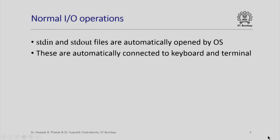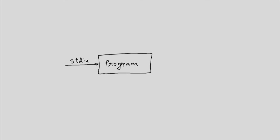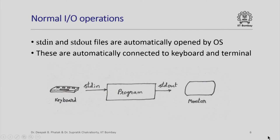Let us look at this action of the operating system diagrammatically. When we execute our program, the operating system connects the file stdin to our program and similarly connects stdout to our program. What the operating system does by default is that it connects stdin to keyboard and stdout to monitor. That is how we are able to type in our input from keyboard, read by the program, and the output produced by the program via stdout connected to monitor goes on to the monitor.